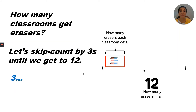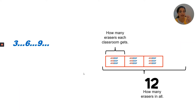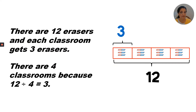Let's skip count by threes until we get to 12. Three, six, nine, twelve. There are 12 erasers and each classroom gets three erasers, so there are four classrooms because 12 divided by four equals three. Four is the number of groups, three is how many in each group, and 12 is how many in all.